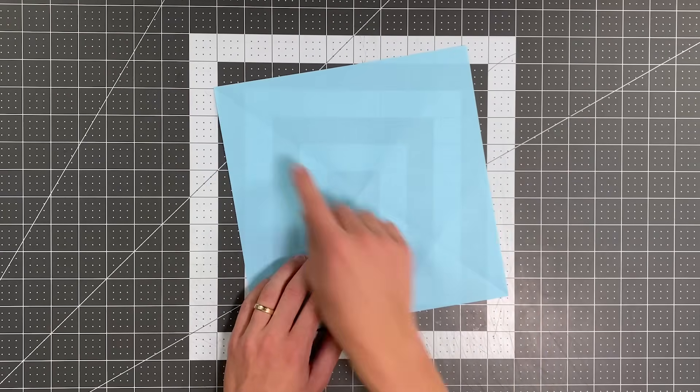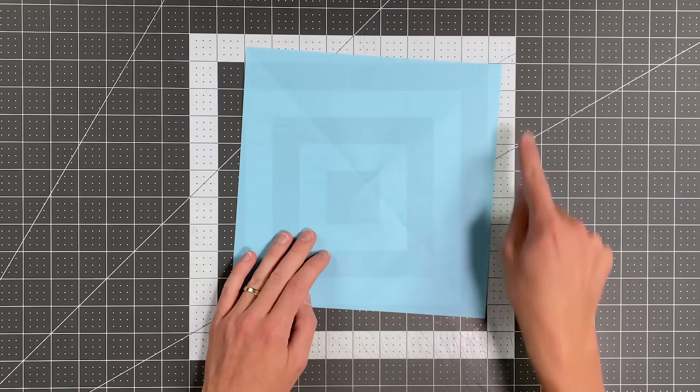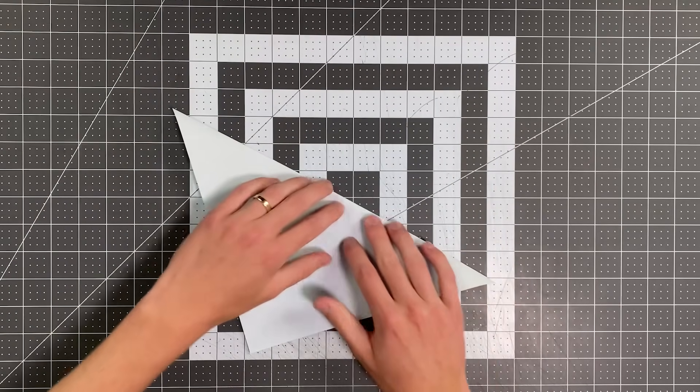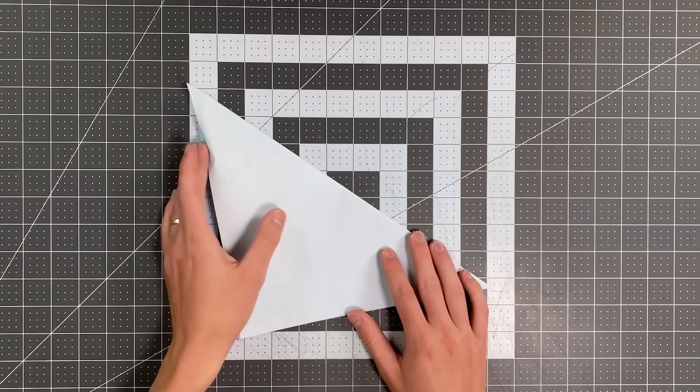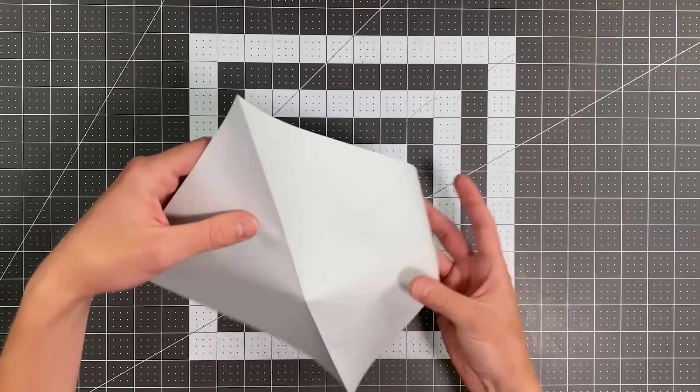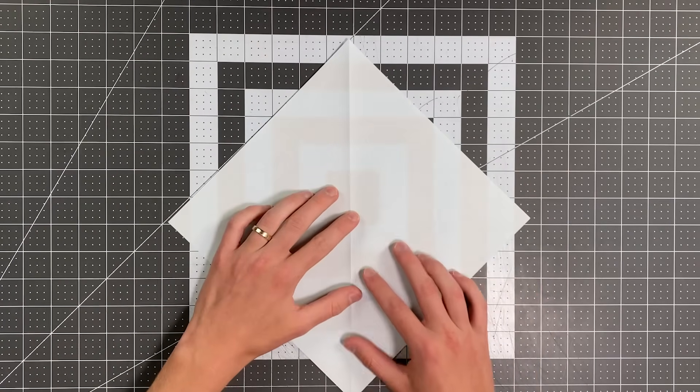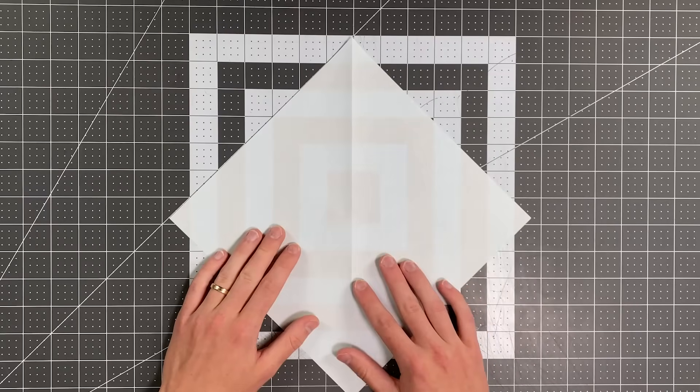You're going to be folding from corner to corner on a diagonal, which means you're taking this corner to this corner here, just like so. And when you end up opening it back up, you will open it up so that the point that was at the top stays at the top, and you have the white side up now.